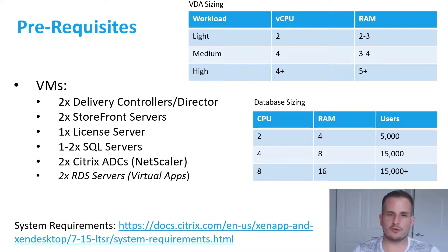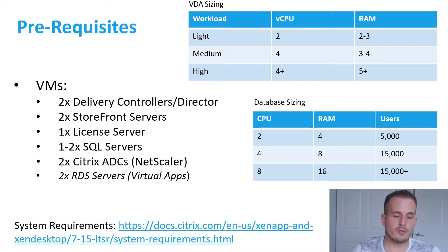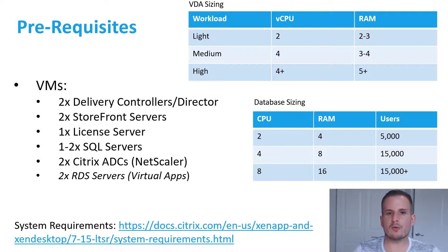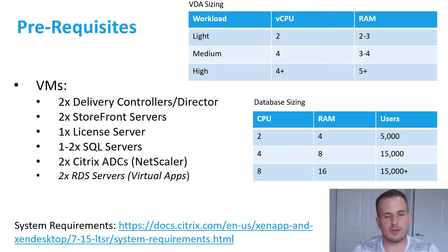Speaking of high availability: you always want to do N+1. The reason we're doing two delivery controllers and two StoreFront servers is to ensure that if one goes down, users can still connect to the second. In the case of 6,000 users, you'd need two delivery controllers to manage that load — on average around 4 GHz CPU can manage around 5,000 users. But accounting for N+1, you'd want at minimum three delivery controllers.